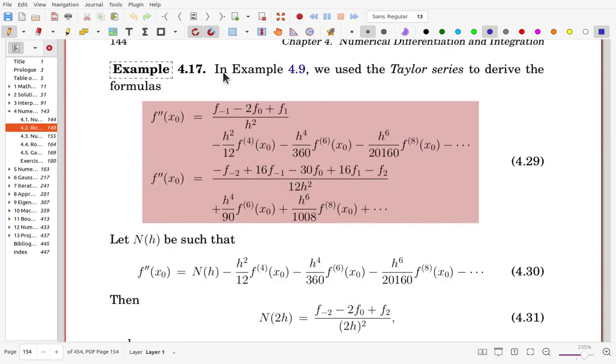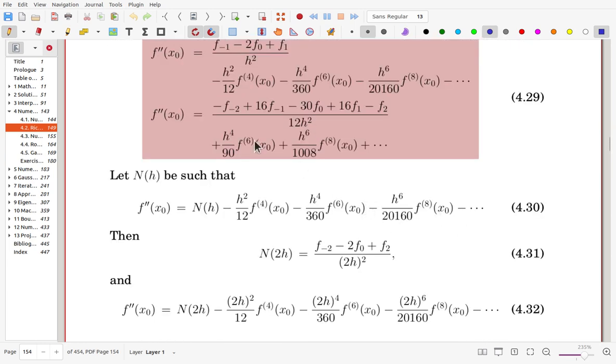In example 4.9, we used the Taylor series to derive the formulas. And here, this formula was obtained. Now, if you are using Taylor series again, fourth order scheme can be obtained in this way. Here, now, using this one, we can write here f double prime at x0. And now, this one N(h), and this term, this is exactly that one.